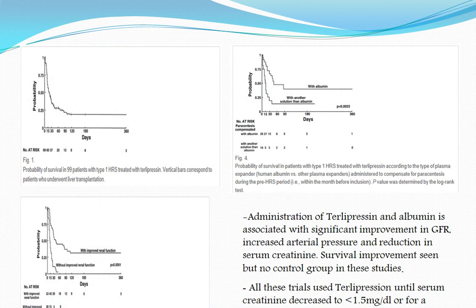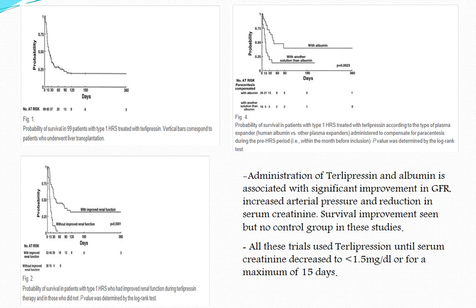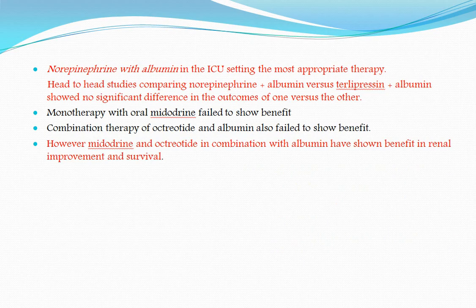Studies on terlipressin plus albumin showed significant improvement in GFR, increased arterial pressure, and reduction in serum creatinine, with survival improvement, though these studies lacked a control group. Trials used terlipressin until serum creatinine decreased to less than 1.5 mg/dL or for a maximum of 15 days. Norepinephrine with albumin in the ICU is the most appropriate therapy where terlipressin is unavailable — such as in the United States. Head-to-head studies comparing norepinephrine plus albumin versus terlipressin plus albumin showed no difference, and norepinephrine is significantly cheaper.